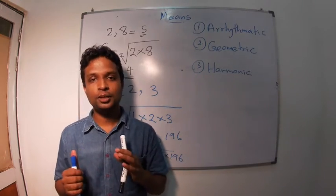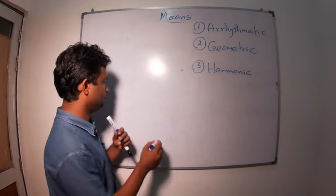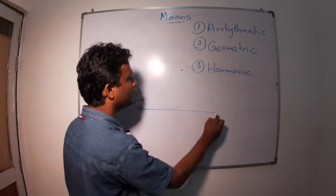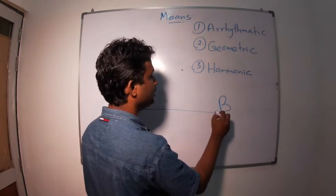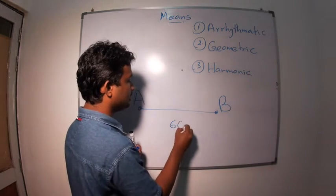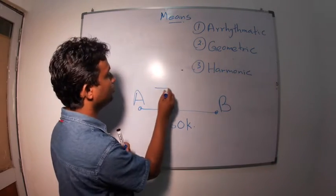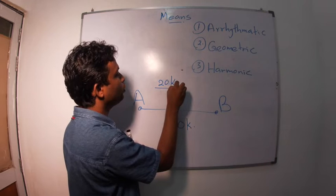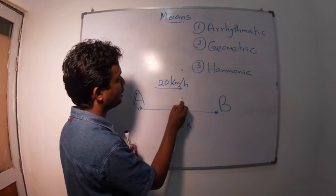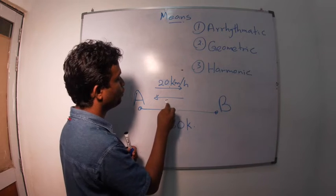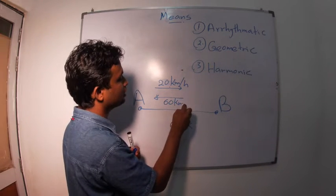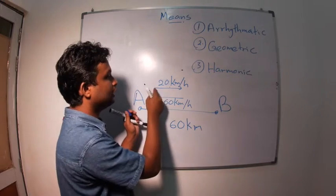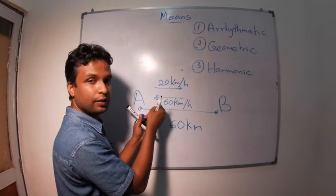Let's consider what is harmonic mean. There's a vehicle. It starts its journey from place A and goes until place B. Thus, 60 kilometers. Vehicle goes from A to B with a speed of 20 kilometers per hour and comes back at the speed of 60 kilometers per hour. Same distance. 60 kilometers goes in the speed of 20 and comes back with the speed of 60.